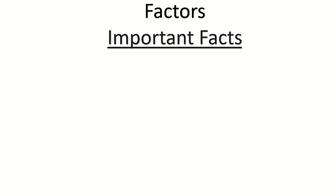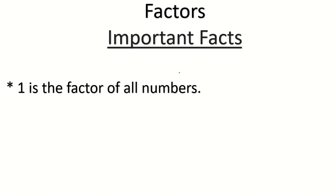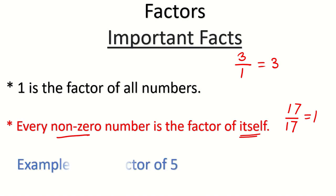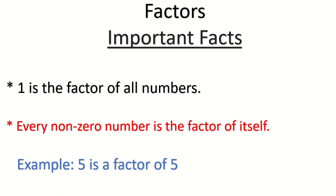Some important facts about factors. First: 1 is the factor of all numbers, because every number will be divided by 1. Second important fact: every non-zero number is a factor of itself. For example, if you divide 17 by 17 it is always divisible and you get the answer 1. So 5 is a factor of 5. These two things will help you especially in multiple choice questions.